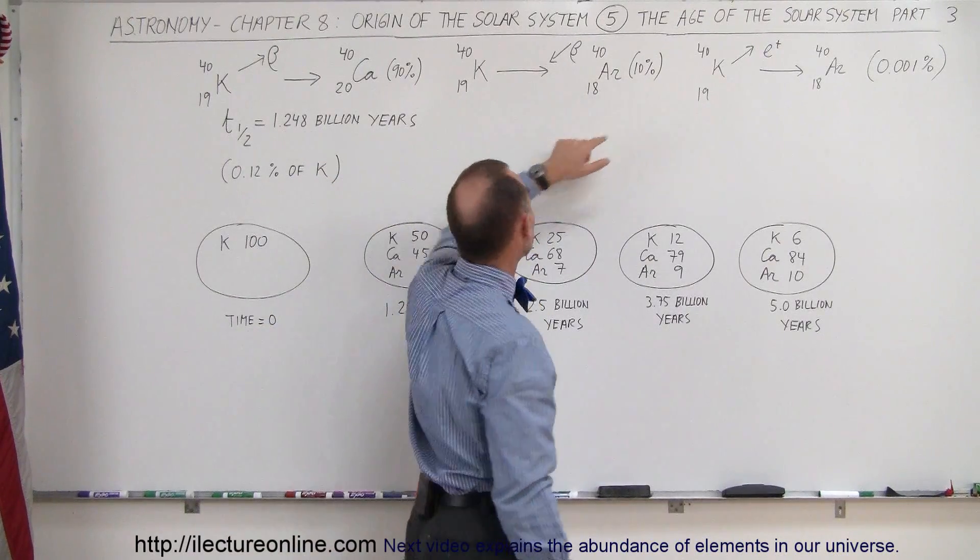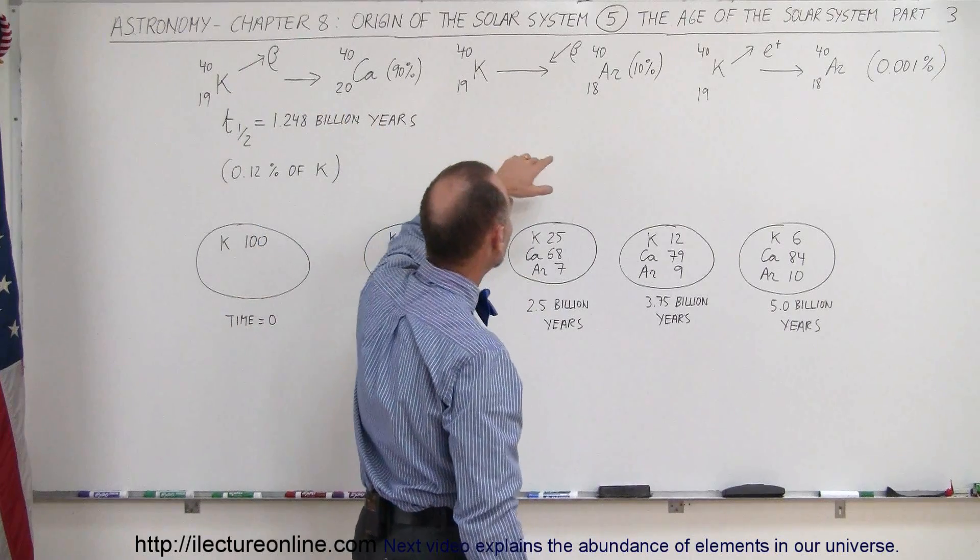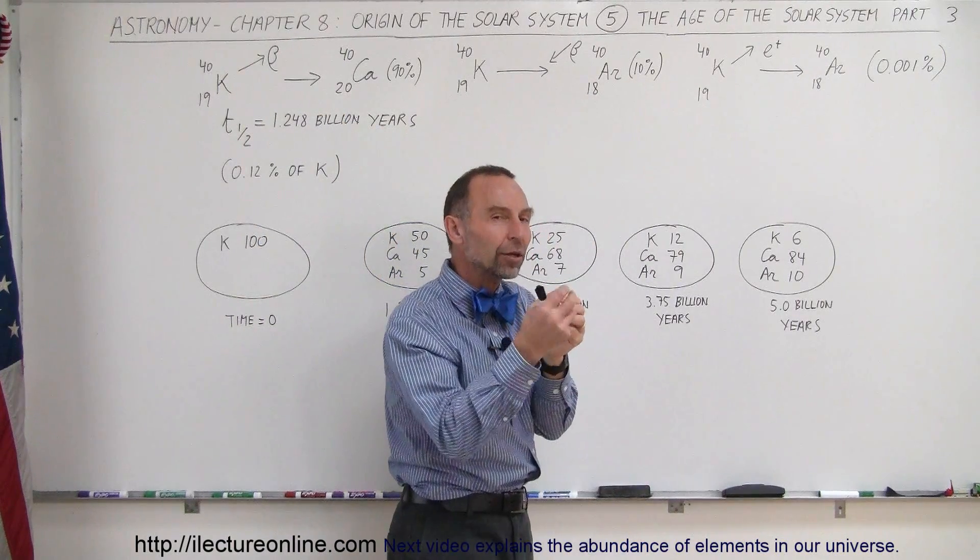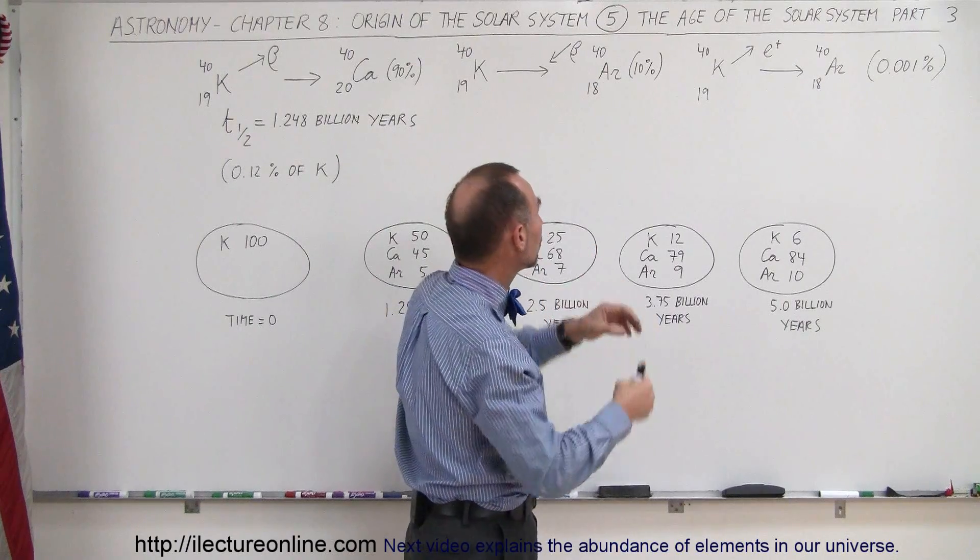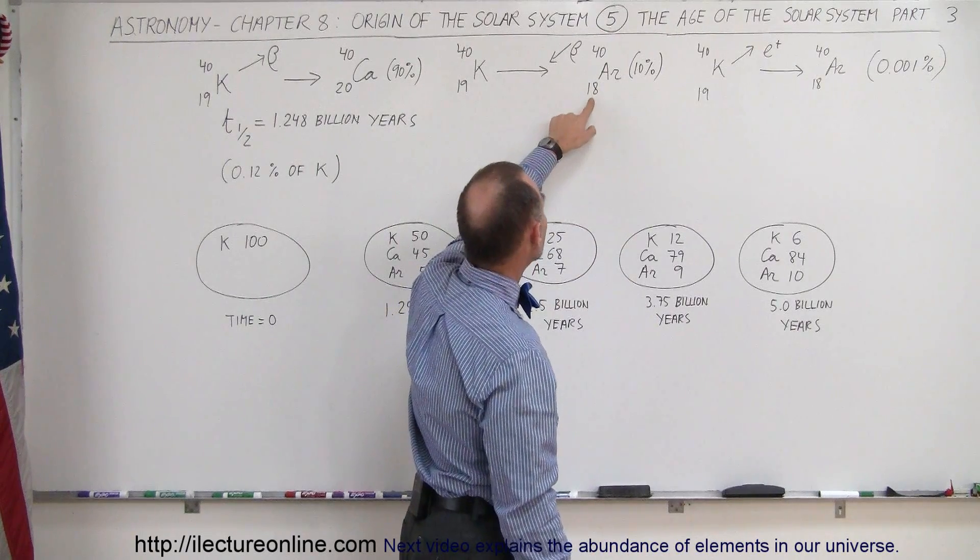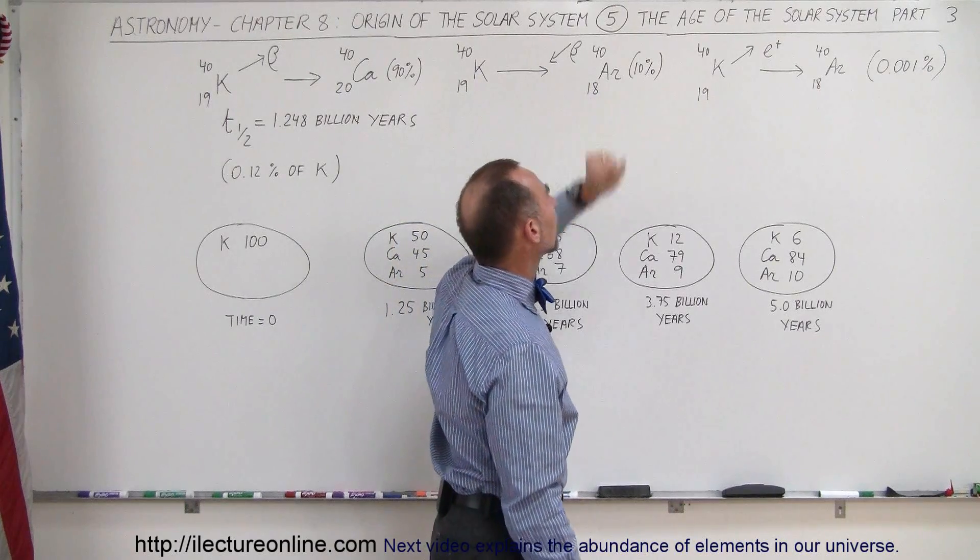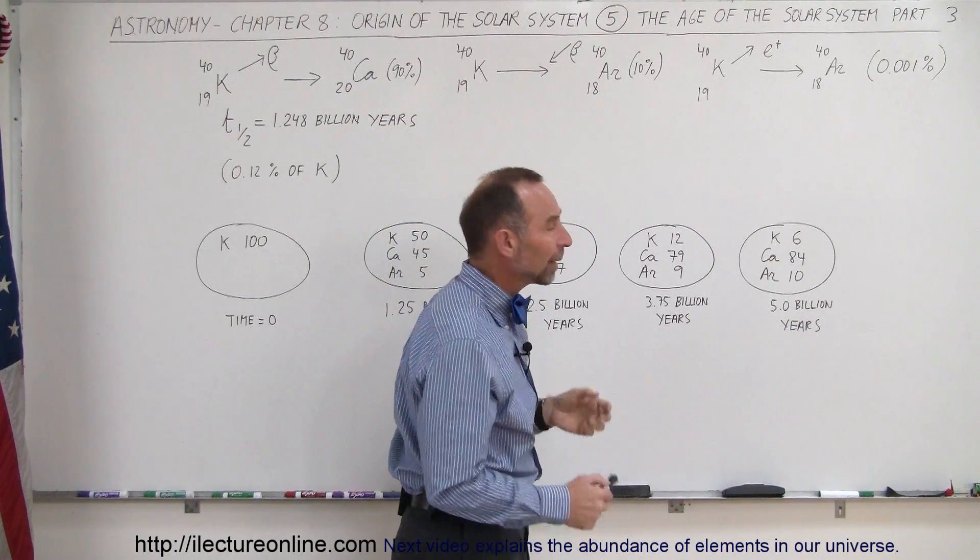It happens about 10% of the time with radioactive potassium. By doing what we call beta capture, where the beta particle is injected into a proton turning it into a neutron, we now only have 18 protons instead of 19 protons, so it changes into argon.